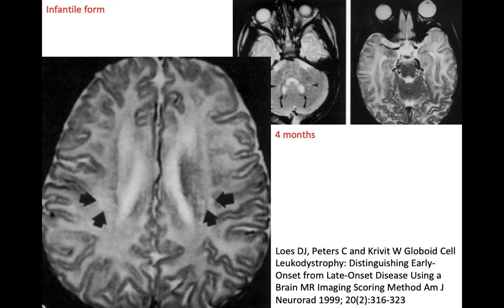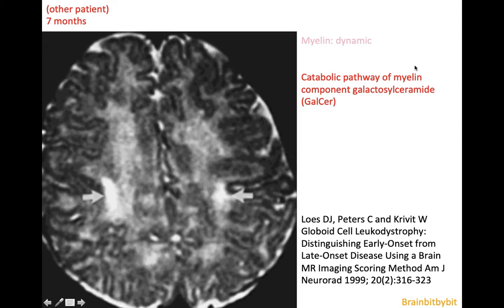Krabbe's disease usually presents at a very young age, a few months after birth. You can see on the T2-weighted images of this four-month-old baby that there is high signal in the corticospinal tract, the dentate nuclei, and symmetrically in the brainstem on these T2-weighted images.